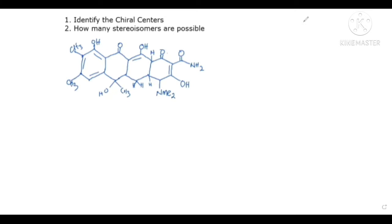Chiral centers are atoms that contain four different groups attached to them. So what we are going to be looking at for question one is atoms that have four different groups on them. Before we do that, I would like us to expand some of these structures, putting the lone pairs on oxygen because they count too, and also on the nitrogens.